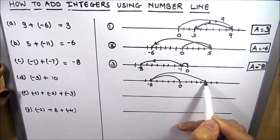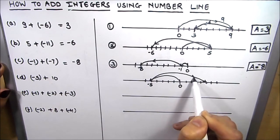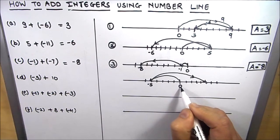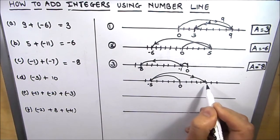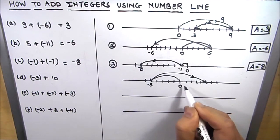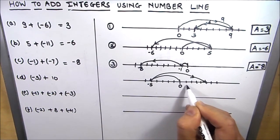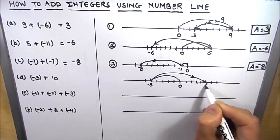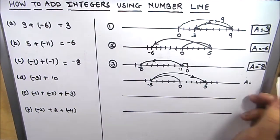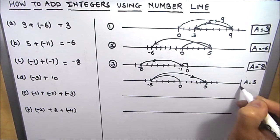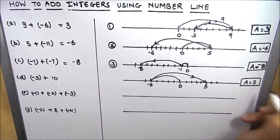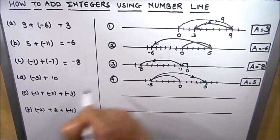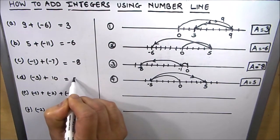We stop here on the positive side. We make the arrows in opposite directions and count from 0 to the resultant point: 0, 1, 2, 3, 4, 5. The answer is 5. That is our fourth example.